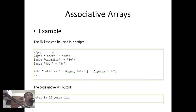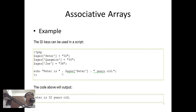Here's another example showing how to access an associative array. We have created the array, then we echo 'Peter is' followed by ages['Peter'], then 'years old.' The output will be 'Peter is 32 years old.' Notice that we don't need to memorize a number — all we do is use the name. That's the advantage of associative arrays: we can more easily remember the index.